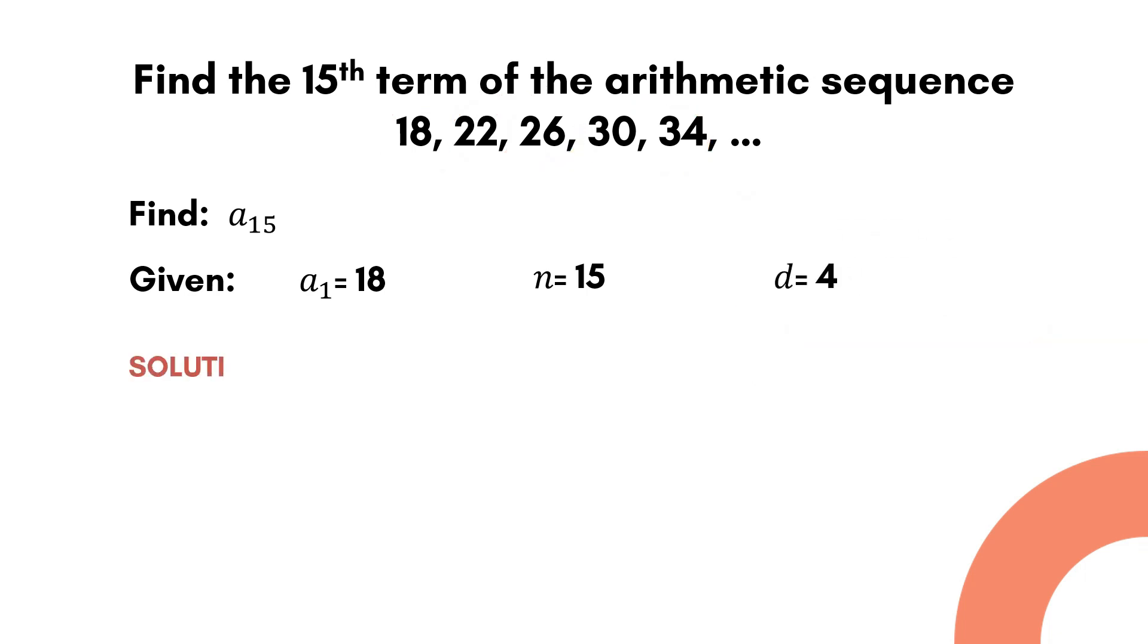We can now solve for a sub 15. We use the formula for finding the nth term of the arithmetic sequence, then substitute the values from the given. Next, simplify the equation by subtracting the numbers in the parenthesis. 15 minus 1 times 4 is equal to 56, and then we add 56 and 18. There we have the final answer of 74. Therefore, the 15th term of the sequence is 74.